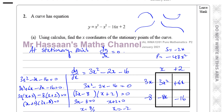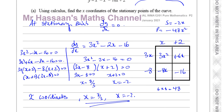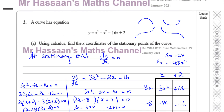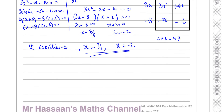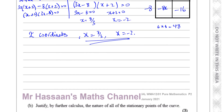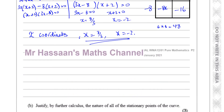They didn't ask us to find the full coordinates — just the x-coordinates — so that's enough, I don't have to go any further. If they said find the coordinates, not specifying just the x-coordinate, you would then substitute x back into the original equation to get the y-coordinate for each of those points. That's part A done; now we can go on to part B.